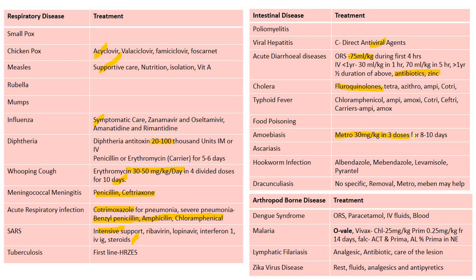Amoebiasis: metronidazole — 30 mg per kilogram in three doses for 8 to 10 days. Hookworm infection: albendazole, mebendazole, levamisole, or pyrantel. Dracunculosis: no specific treatment; removal of the worm from the site; metronidazole has a role; mebendazole may also help. Dengue syndrome: ORS plays an important role, paracetamol; IV fluids for hemorrhage and shock.